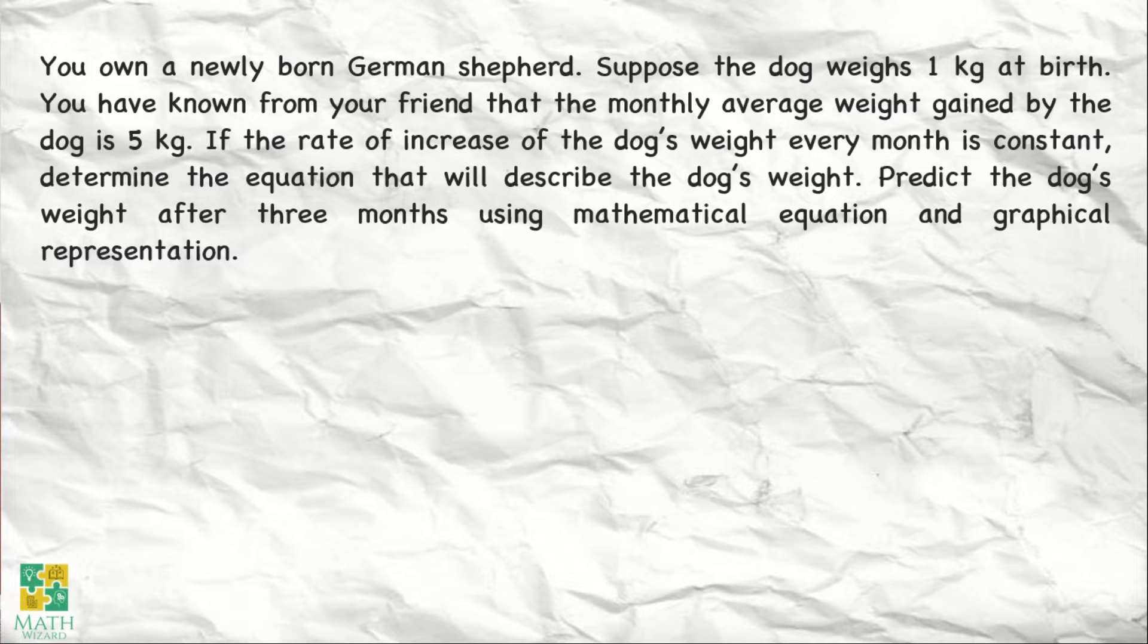You own a newly born German Shepherd. Suppose the dog weighs 1 kilogram at birth. You have known from your friend that the monthly average weight gained by the dog is 5 kilograms. If the rate of increase of the dog's weight every month is constant, determine the equation that will describe the dog's weight. Predict the dog's weight after 3 months using mathematical equation and graphical representation.